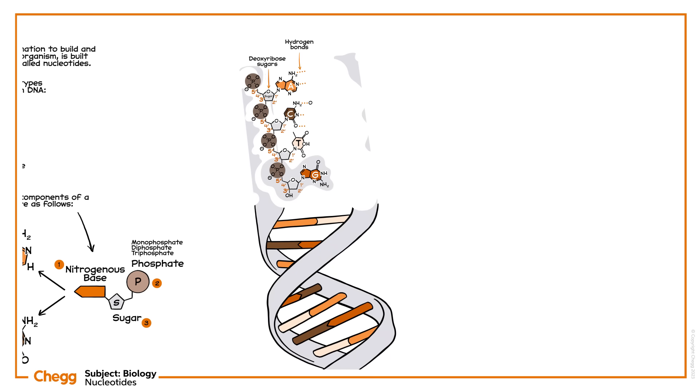The full name of DNA, deoxyribonucleic acid, gives you a clue about which type of sugar it contains: deoxyribose. In RNA, on the other hand, the sugar is ribose.